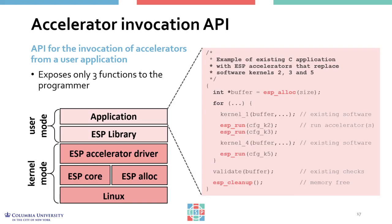Here we see an example. For a given application, the software execution of a computationally intensive kernel can be replaced with a hardware accelerator by means of a single function call. The figure shows the case of an application with five kernels — two executed in software and three implemented with an accelerator. You can see the accelerator calls via the ESP run function. Data allocated with the ESP run function are shared across accelerators and processors, and no data copies are necessary. The argument of the ESP run function contains a set of configuration parameters specifying which accelerators to invoke and how. A single invocation of ESP run can invoke multiple accelerators, and in this way we can exploit the accelerator-to-accelerator communication feature.